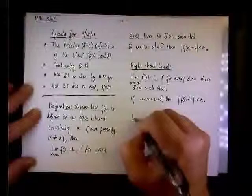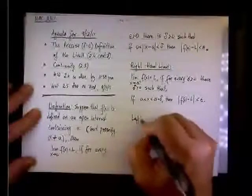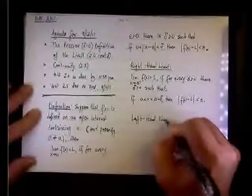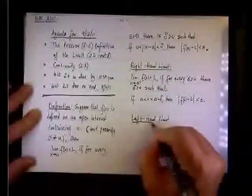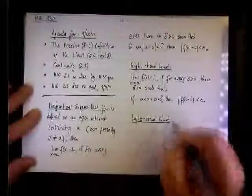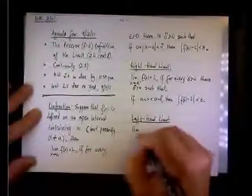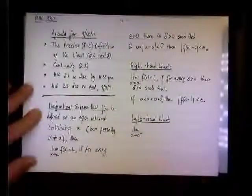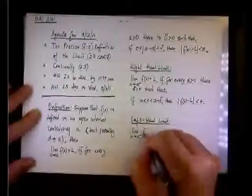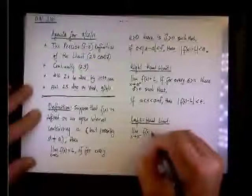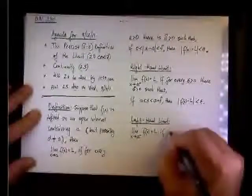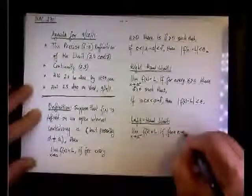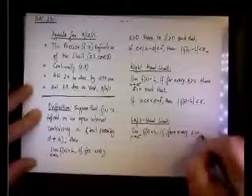Likewise, we can look at the left-hand limit. We approach from the left. So you can see that minor adjustment. We're going to say that the limit as x approaches a minus, in other words, we approach a from the left side, the limit of f of x equals L, if for every epsilon positive.